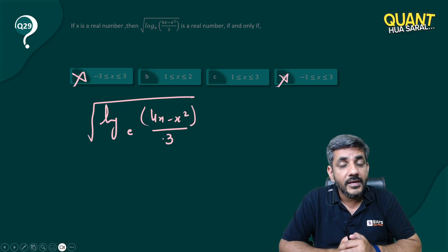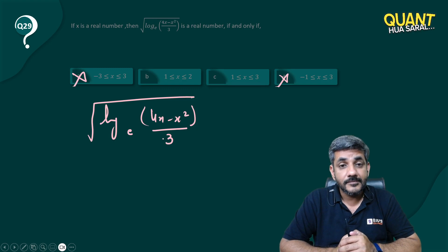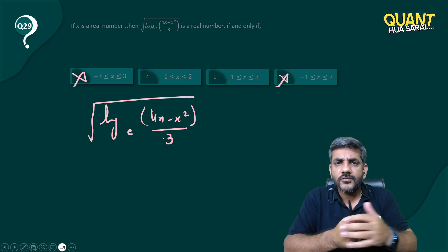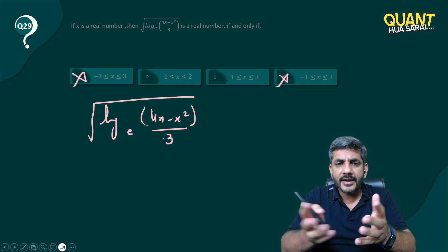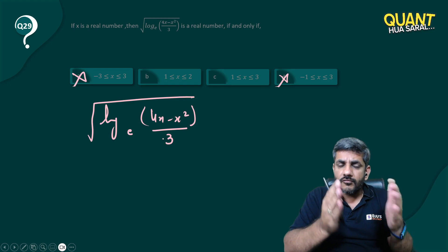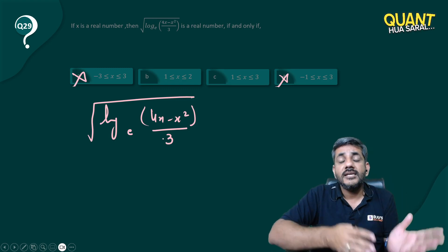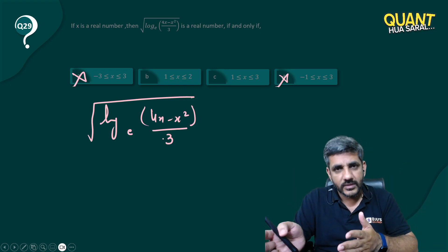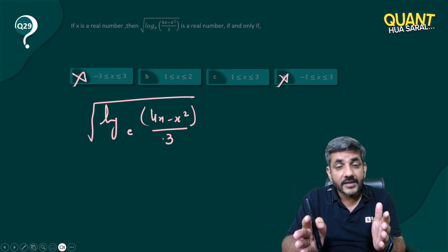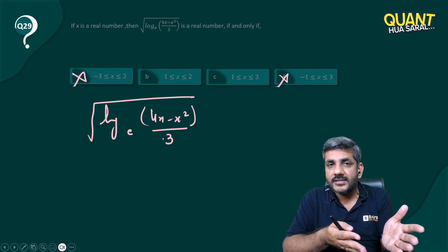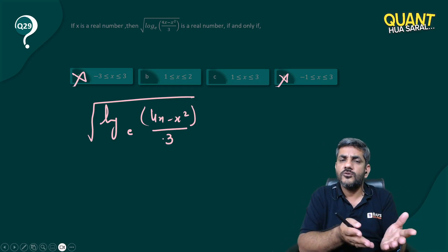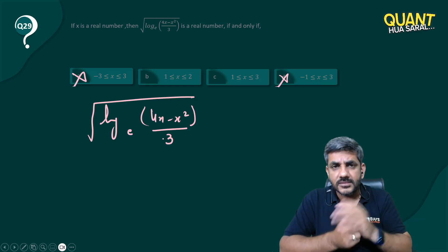This range has a zero in it — forget it. This range also has a zero in it — forget it. So my answer is going to be either B or C. Out of B and C, one range goes from 1 to 2, and one goes from 1 to 3. Since 1 to 2 is inside 1 to 3, the values between 2 and 3 are the deciding factor. If they satisfy the expression, my answer is C; if they don't, it's B.